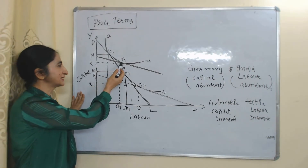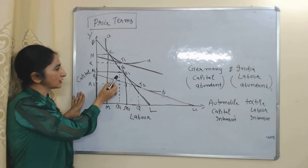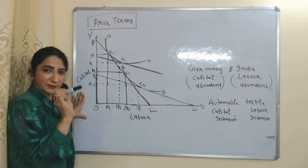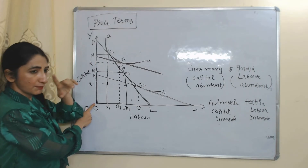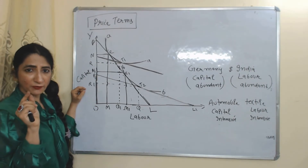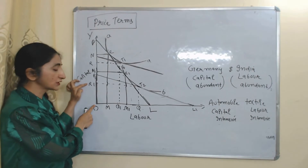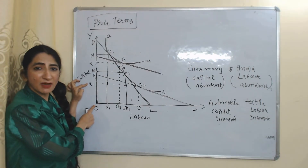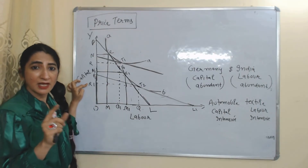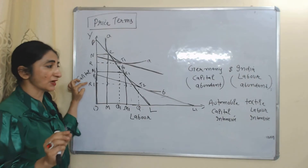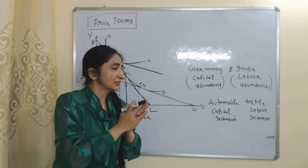Now we will see how much capital India needs for each product. In the diagram, T1 and T2 show the equilibrium of India, and the dotted lines represent India. If India wants to produce one unit of automobile, it needs capital OR. If India wants to produce one unit of textile, it needs capital OR1. Since OR is greater than OR1, producing automobiles requires more capital, but India has a scarcity of capital. Therefore, India will not produce automobiles and will import them instead.